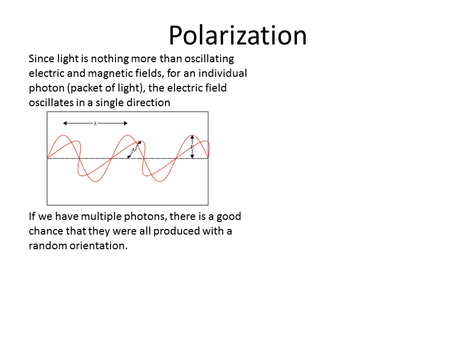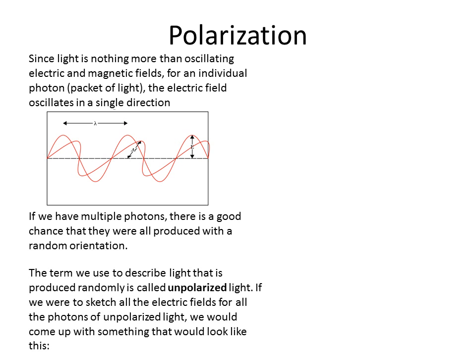Now, if we have multiple photons, there's nothing that says that we have to have all the photons oscillating in the same direction. We can have them randomly oriented. And if they're randomly oriented we're going to call this light unpolarized.